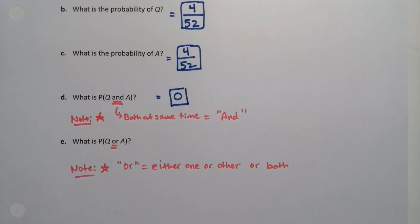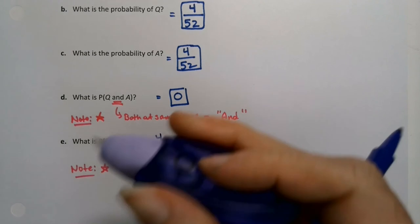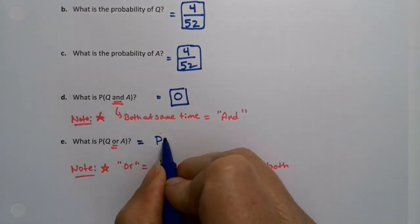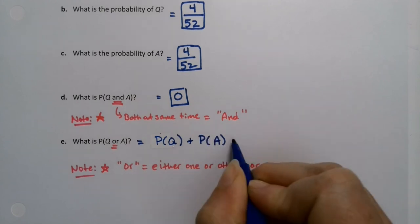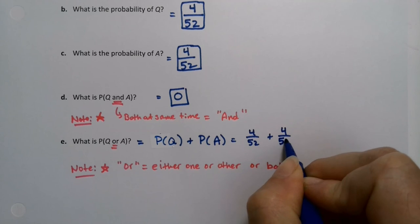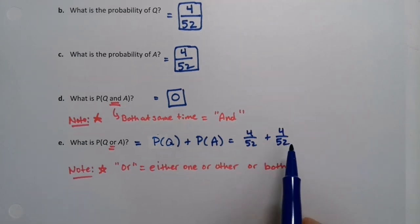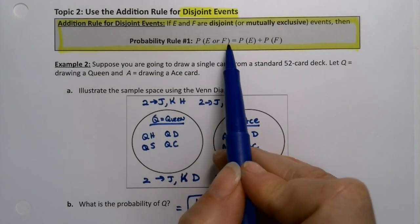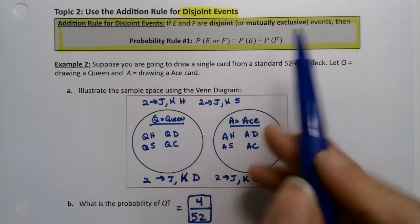All right. So the probability of a queen is four out of 52. Matter of fact, I'm just going to write it this way. This is according to rule number one. It's the probability of queen plus the probability of ace, which is four out of 52 plus four out of 52. That's what the addition rule for disjoint events says. You can just add. If you want the probability of queen or ace, you take the probability of queen plus the probability of ace. They're disjoint, so you just add them up.